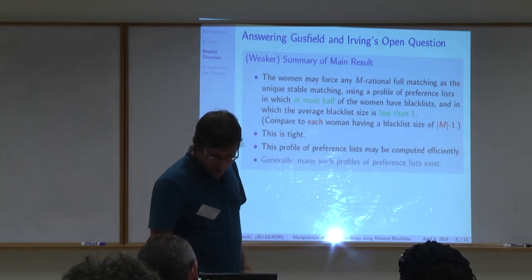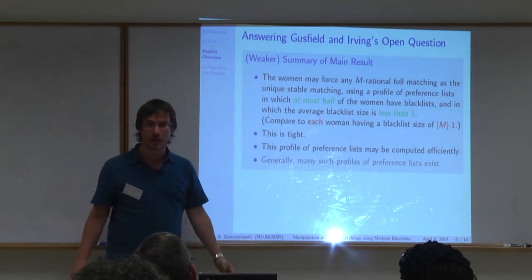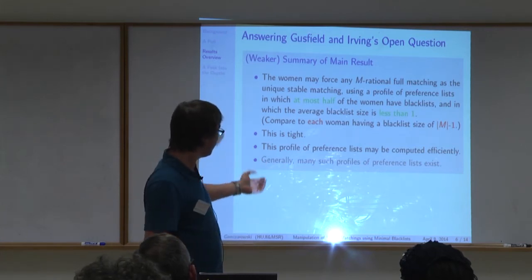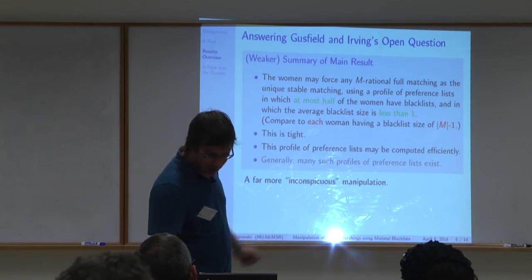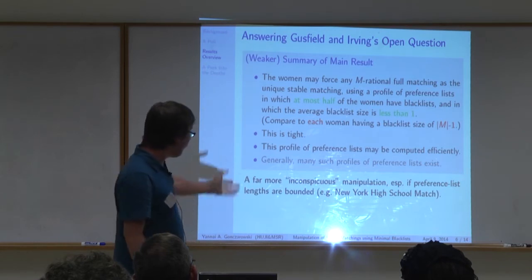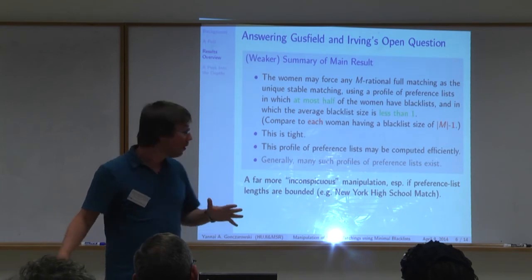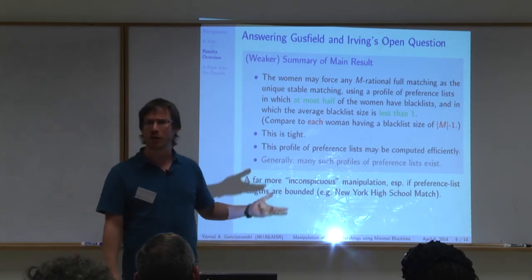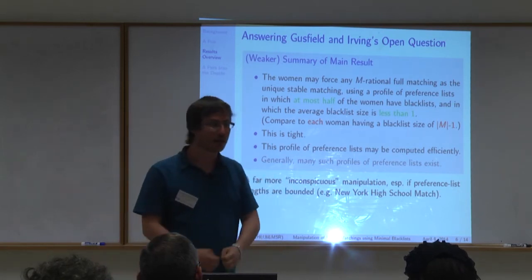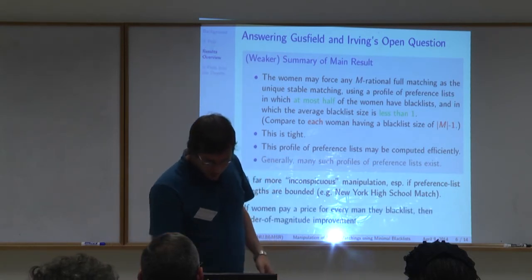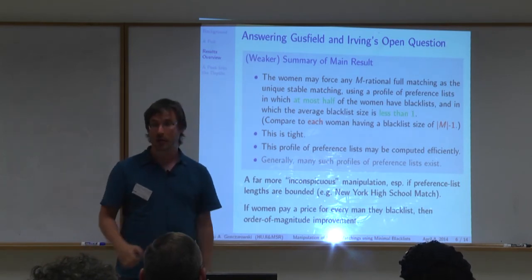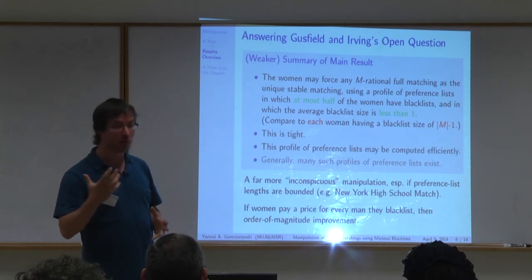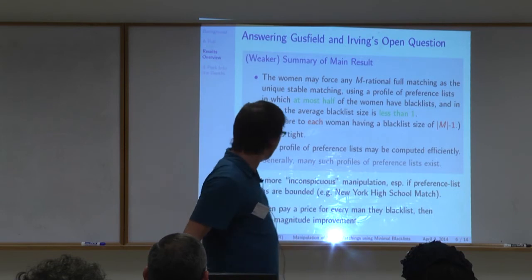Summary of the main result: women may force any M-rational full matching as the unique stable matching using a profile of preference lists in which at most half of the women have blacklists and the average blacklist size is less than one. Compare this to each woman having a blacklist of size n minus one. This is tight — the sum of all blacklists is at most n minus one, and sometimes you actually need this. I also give an efficient algorithm to compute this set of preferences, and generally many such preference profiles exist. This allows for far more inconspicuous manipulation, especially when participants are already asked to submit partial preference lists — as in New York, where students submit lists of only 5 or 13 schools.